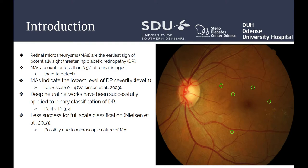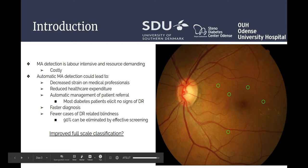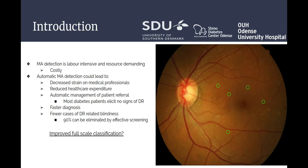Deep neural networks have been successfully applied to binary classification of diabetic retinopathy, but we have seen less success for full-scale classification, possibly due to the microscopic nature of microaneurysms. MA detection is labor-intensive and resource demanding, and automatic MA detection could lead to a number of potential benefits, including reduced healthcare expenditure. The question is then, can it also be used to improve full-scale classification?